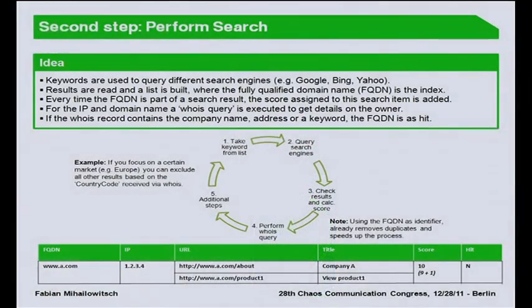The next step is that we resolve the IP and perform whois queries for the FQDN and the IP. If the whois information contains terms from the list or the company name, then it's definitely a hit — if whois contains the company name, it's probably hosted by them. You can then add additional filter steps. For example, if a company only operates within the European market, you can completely filter out systems not hosted within Europe.